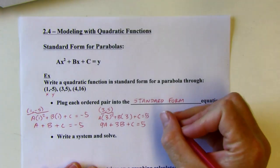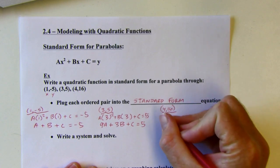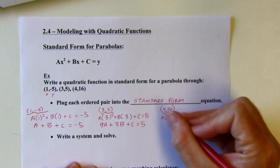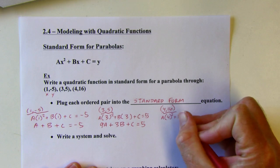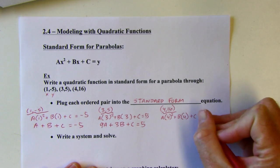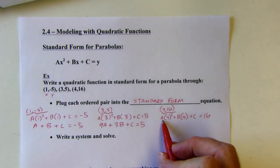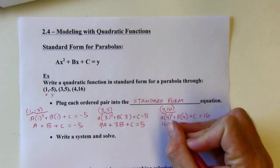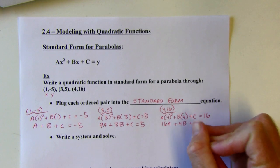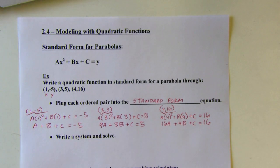Let's process once more with the point (4, 16). The x is going to get squared here. 4 squared is 16, so 16 times a would be 16a plus 4b plus c equals 16. So now what I'm going to do is use these three equations together.